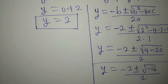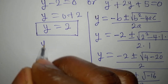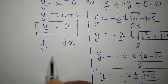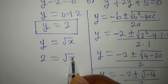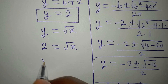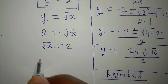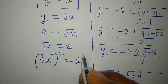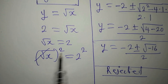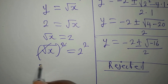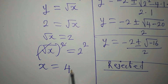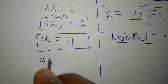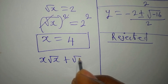We go back to y equals square root of x. Since y equals 2, we have square root of x equals 2. Squaring both sides, x equals 2 squared, which is 4. So x equals 4 is the value that satisfies x times square root of x plus square root of x equals 10.